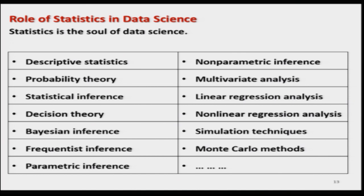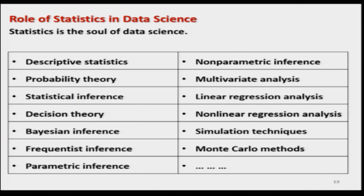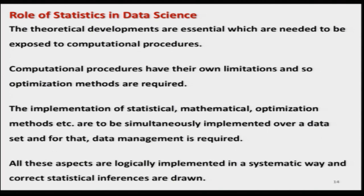Statistics is the soul of data science, and there are different types of subjects contributing to understanding data science: descriptive statistics, probability theory, statistical inference, decision theory, Bayesian inference, frequentist inference, parametric inference, non-parametric inference, multivariate analysis, linear regression analysis, non-linear regression analysis, simulation techniques, Monte Carlo methods, and so many more. But there is always a point where we start, and this course is going to give you a starting point to learn these topics.